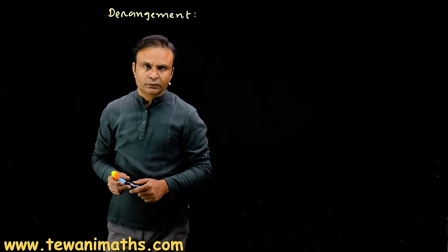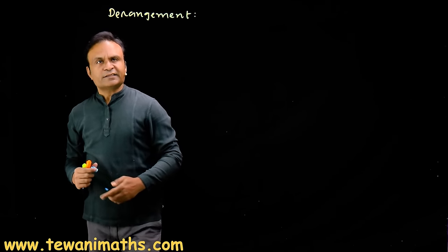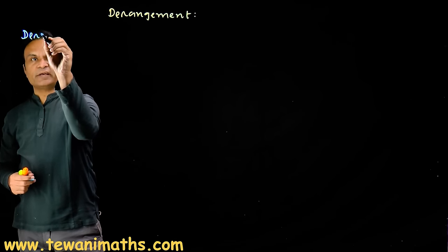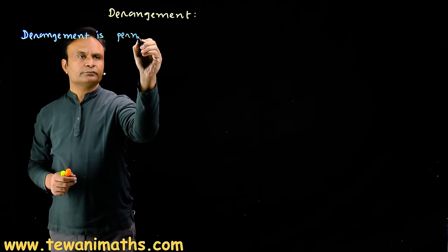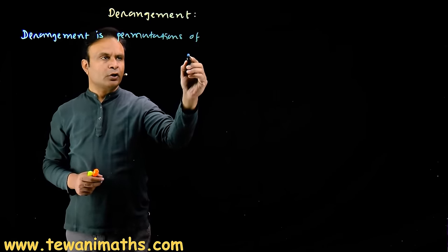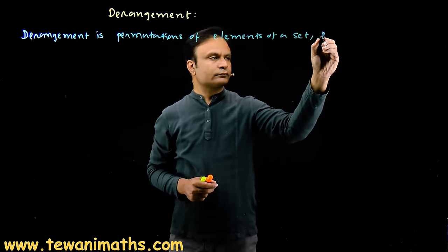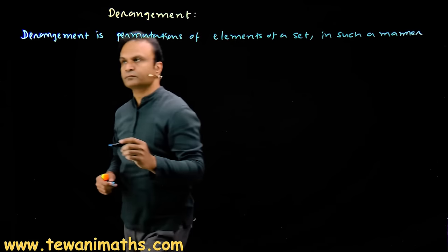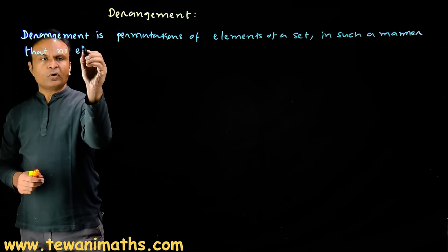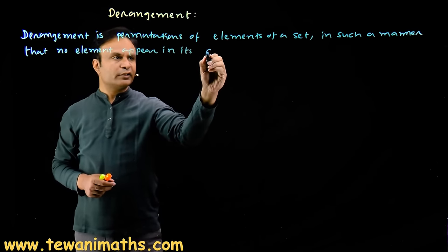What is derangement? From the word it seems to be just opposite to arrangement. Let's define derangement formally. Derangement is a permutation of elements of a given set in such a manner that no element appears in its original position.